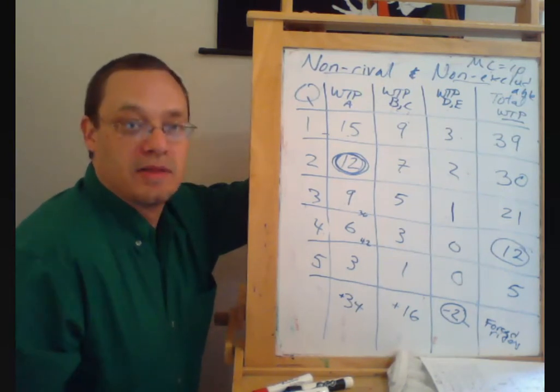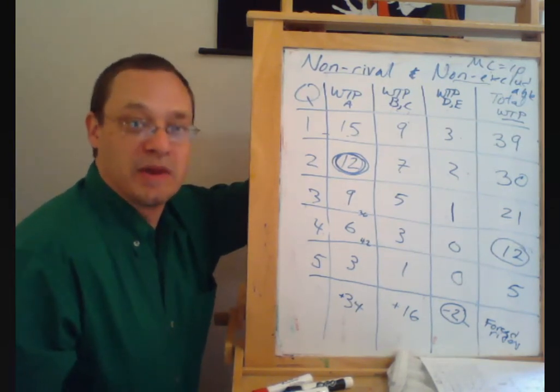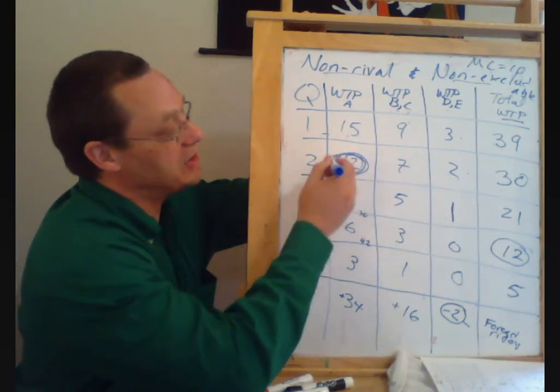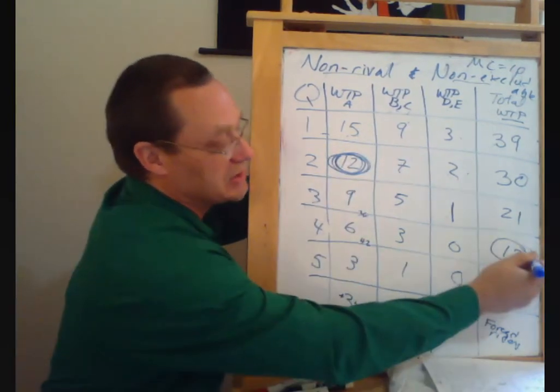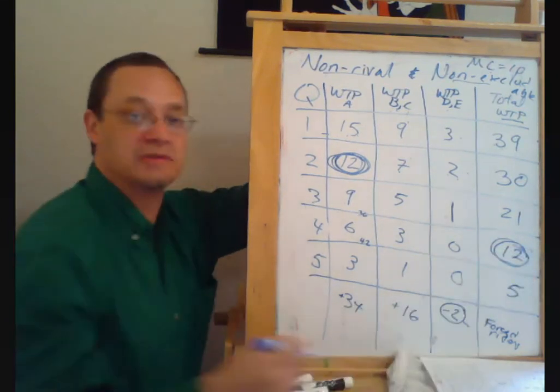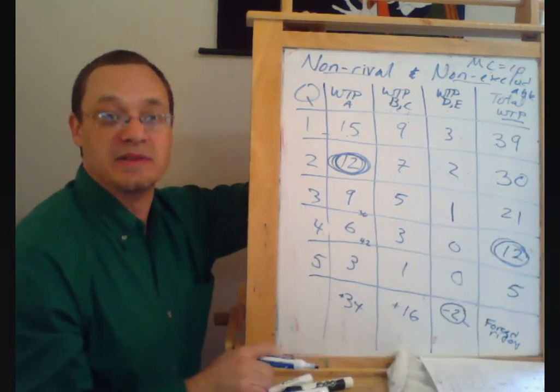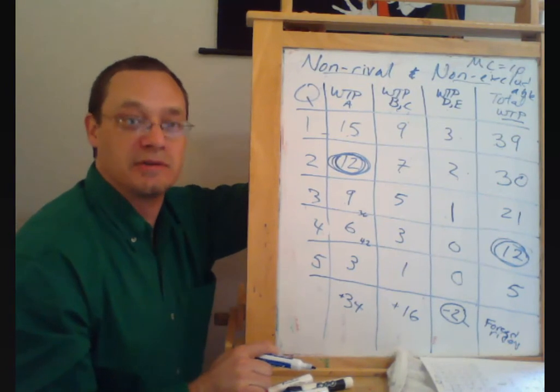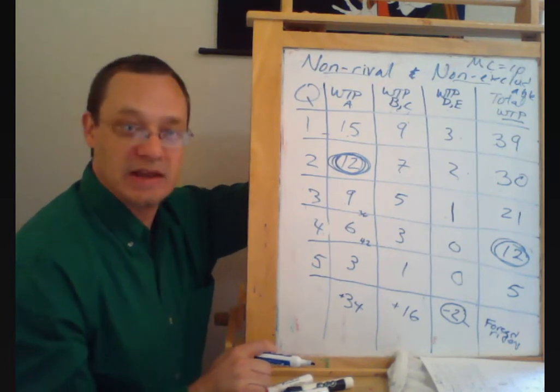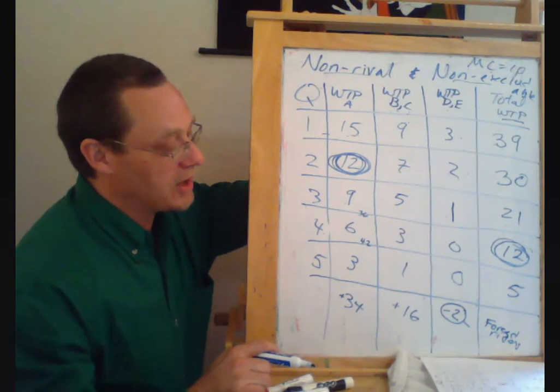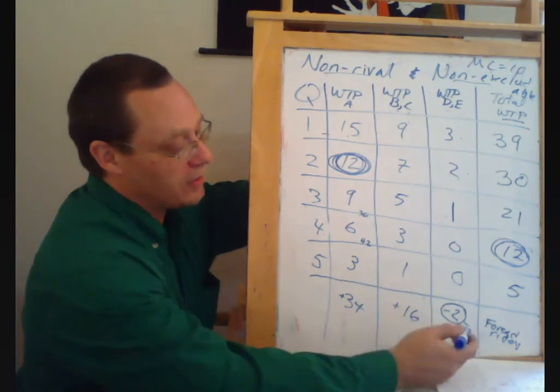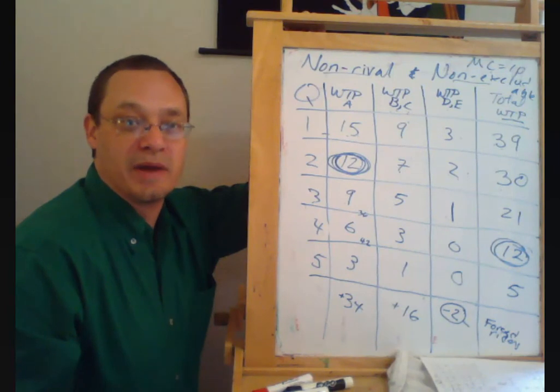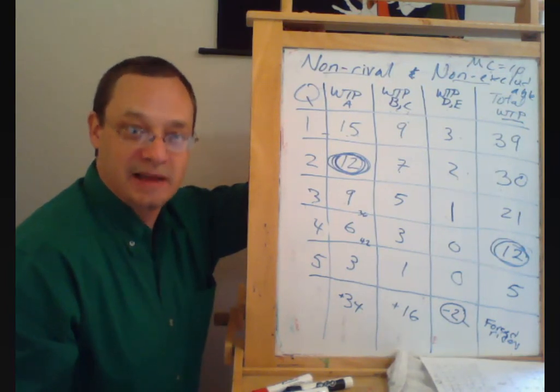So that's one thing that might happen when we have public good provision. We might decide that we don't want the market allocation, but instead want to sort of get together and vote and tax ourselves and provide these things communally. Both of them have potential problems associated with them. In a second, I'll go ahead and explore, well, do we want to fund this by that kind of everybody pays an equal amount of tax mechanism?